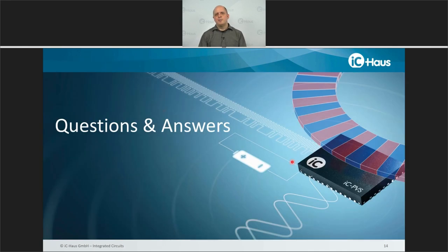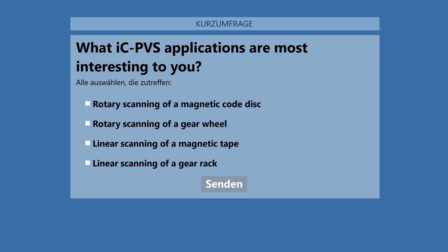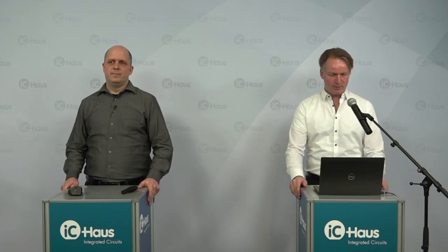Thank you very much, everyone. That concludes my part of the presentation. We'll just take a short time for a quick poll. Thank you for taking the poll. As you can see, rotary scanning of magnetic code disks is the main topic of interest, but there's also a fair bit of respondents interested in rotary scanning of gear wheels and linear scanning of magnetic tape. Thank you very much for taking the time. I have quite a few questions, Patrick, so we'll work through these.